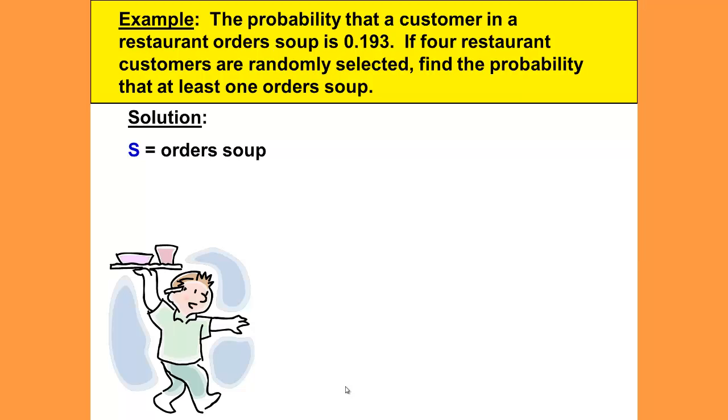S is orders soup. The probability of S would be 0.193. N is going to be does not order soup, and probability of N is 1 minus 0.193, which would be 0.807.